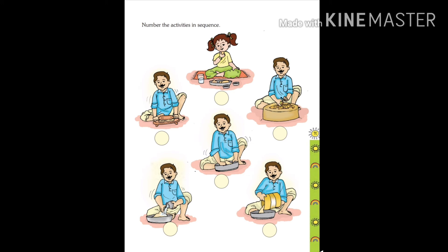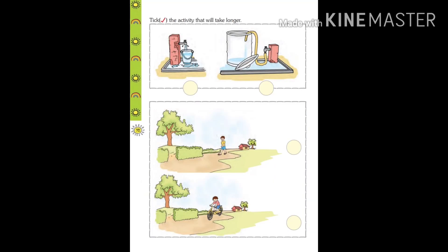Now come to the next page — page number 91. There is an activity: number the activities in order. We will identify which activity will take longer. Now page number 92 — tick the activity which will take longer.